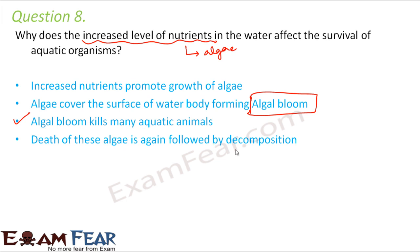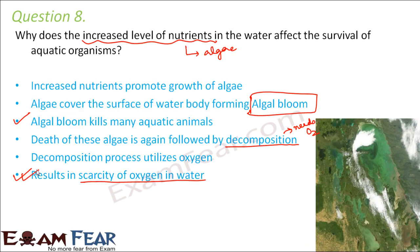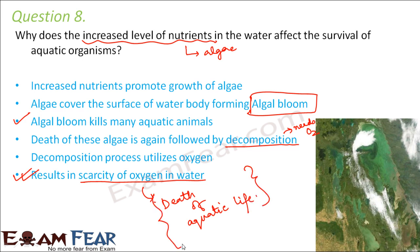Even after these algae die, the aquatic organisms will still suffer because the process of decomposition starts. Decomposition in water leads to a scarcity of oxygen, because the decomposition process requires oxygen — a lot of oxygen gets used up. This scarcity of oxygen will result in the death of aquatic life. So algal bloom harms aquatic life in both ways: while present it blocks sunlight and produces toxins, and after dying, decomposition uses up all the oxygen causing aquatic life forms to die.